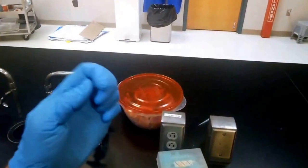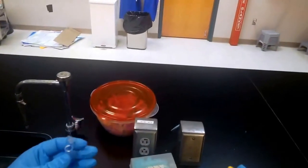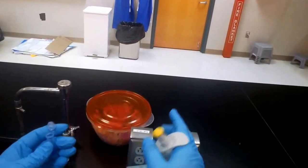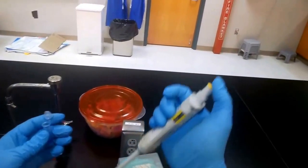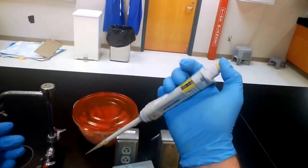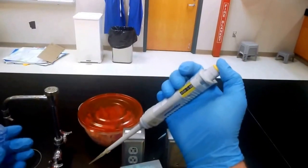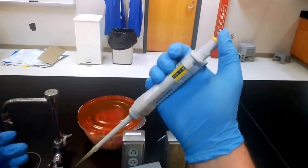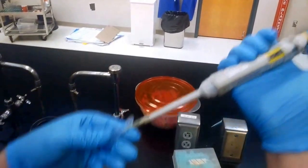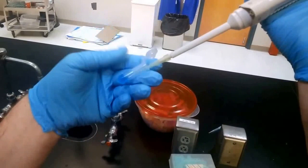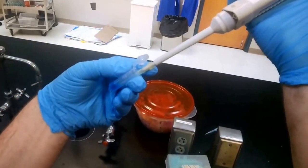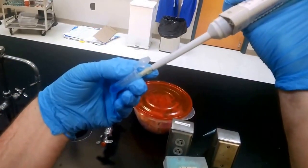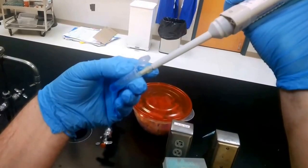We'll set our pipette correctly in our hands. Now the two buttons here—there's the first stop, there's the second stop. So we'll go to the first stop, depress the tip into the solution, and slowly pull up so that we have a nice cone. Notice there's no air bubbles.